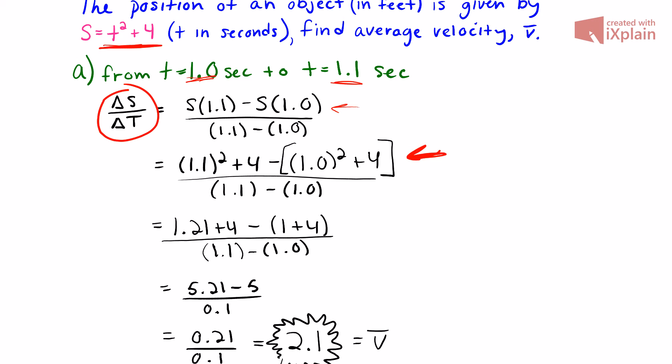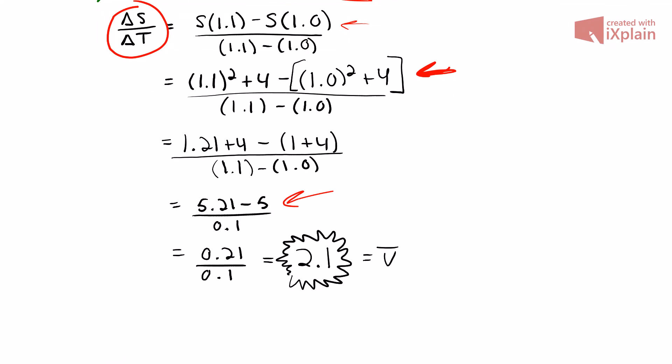When we come down here, we get 5.21 - 5, and this is all over our change in time, which is 0.1.